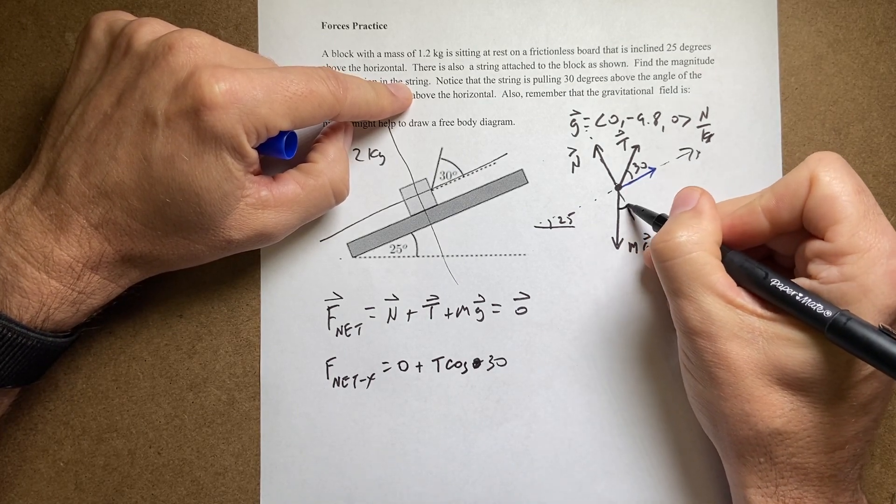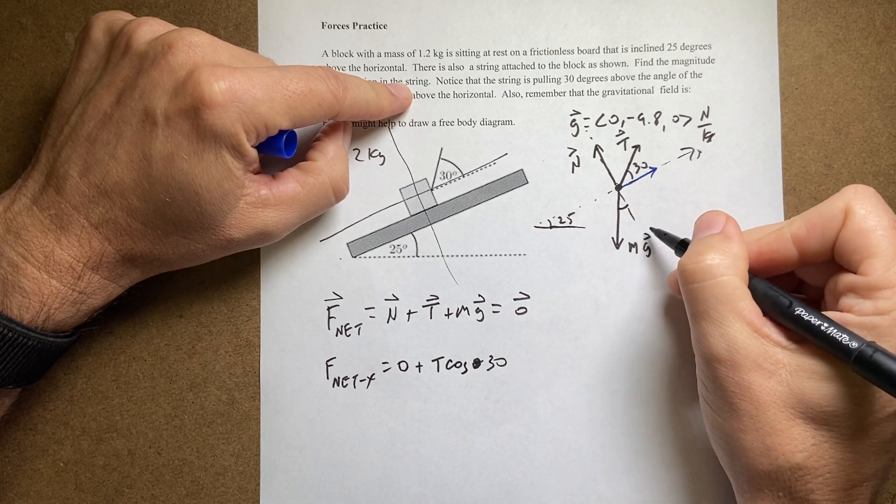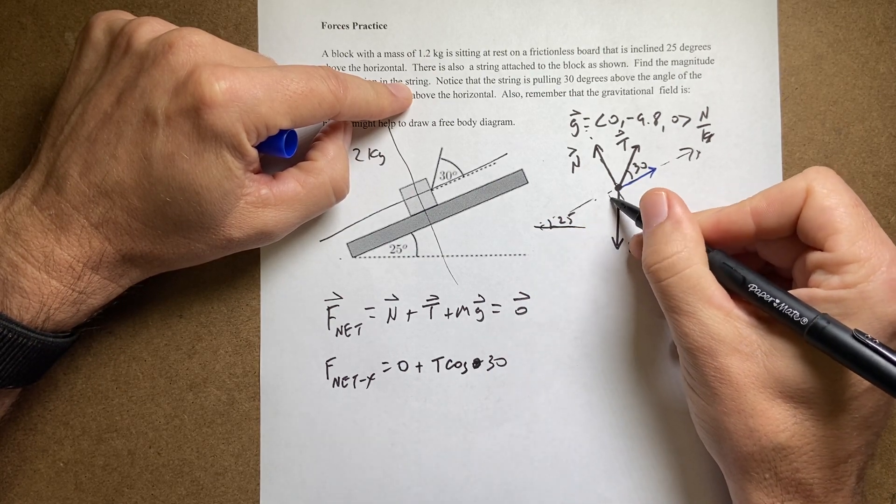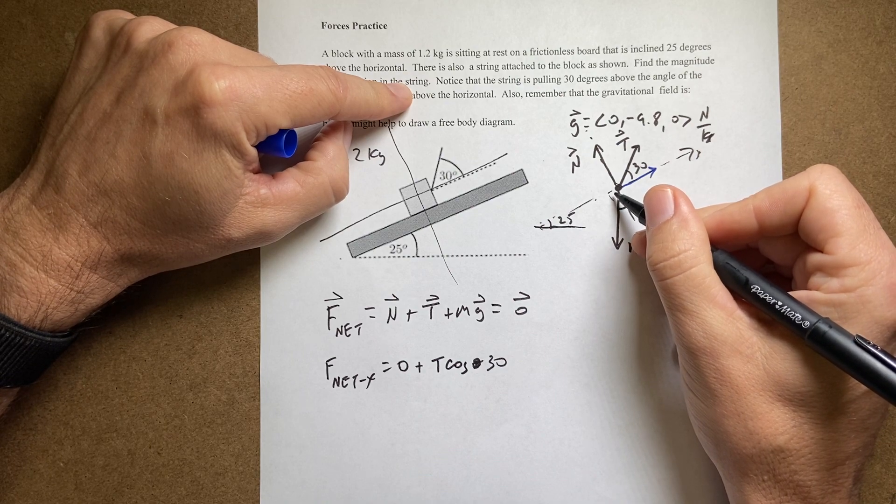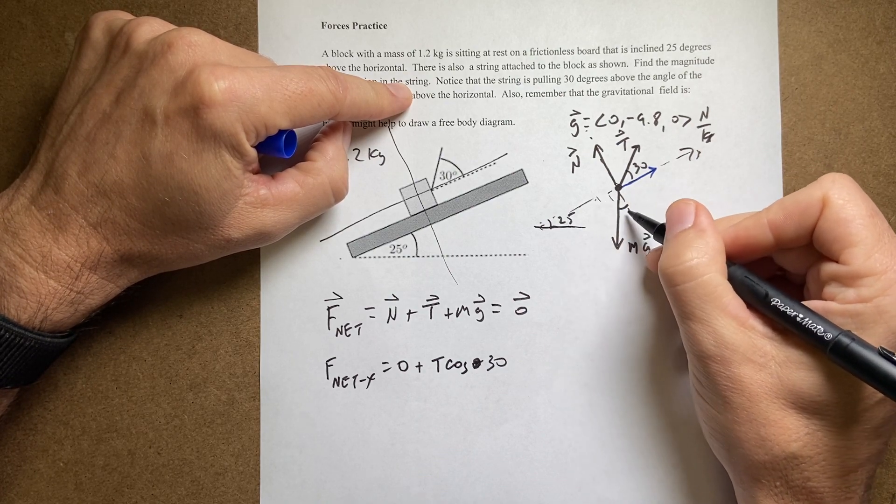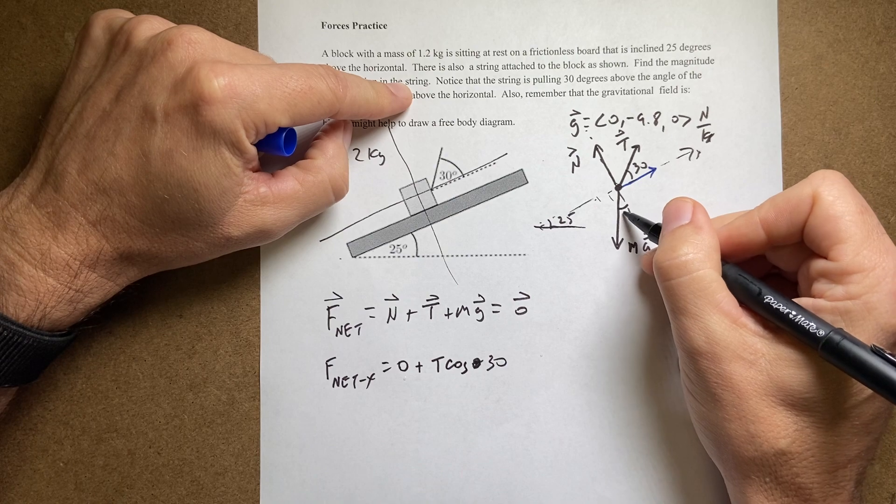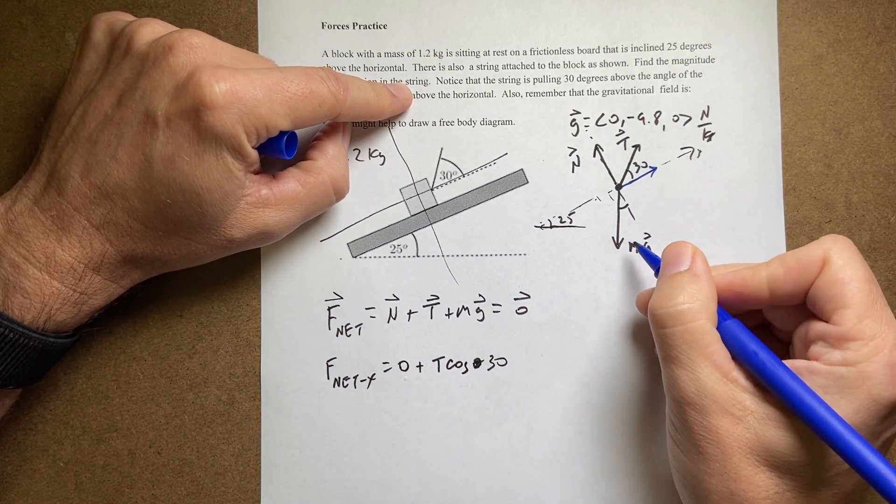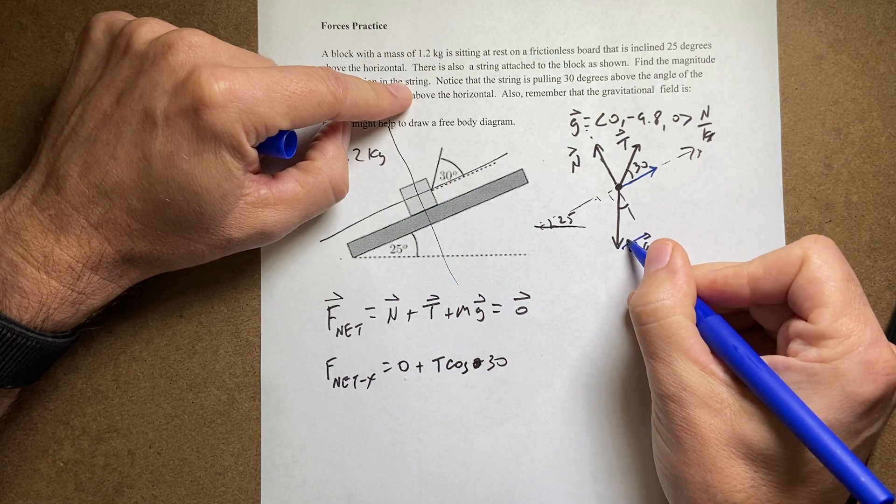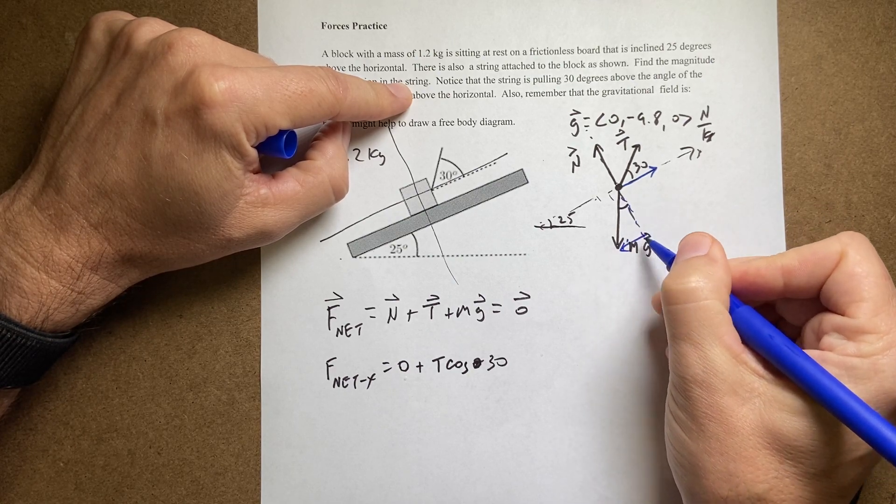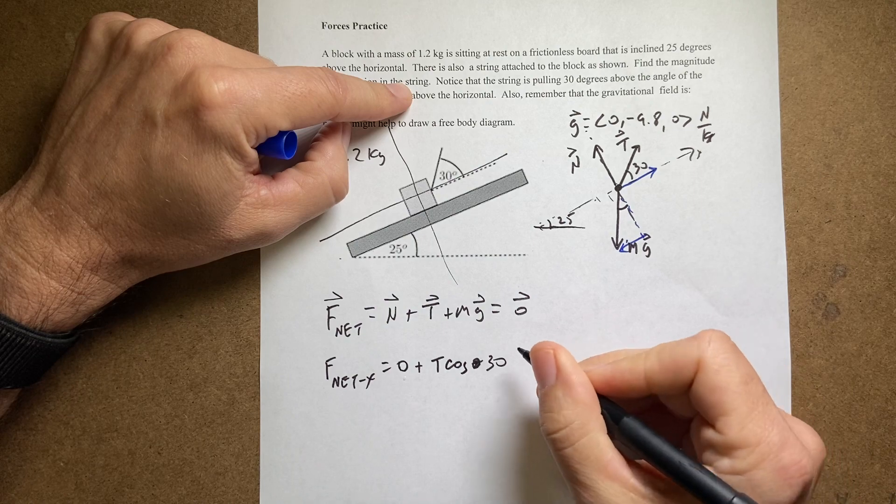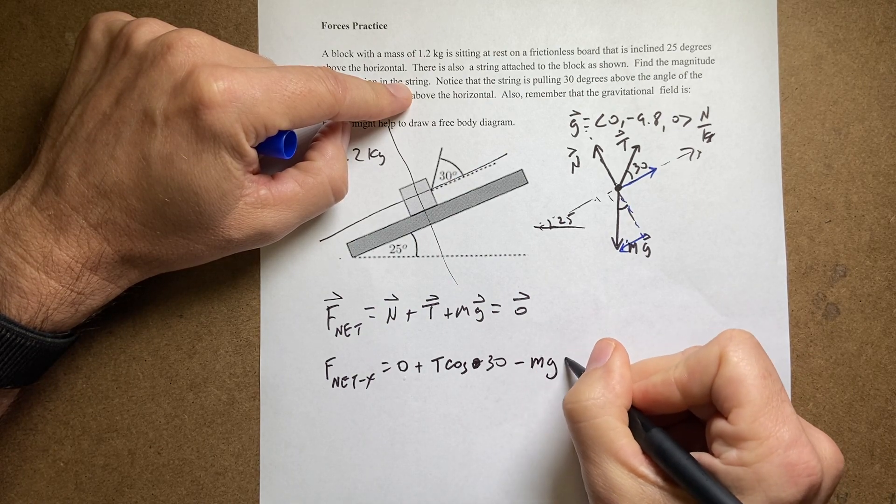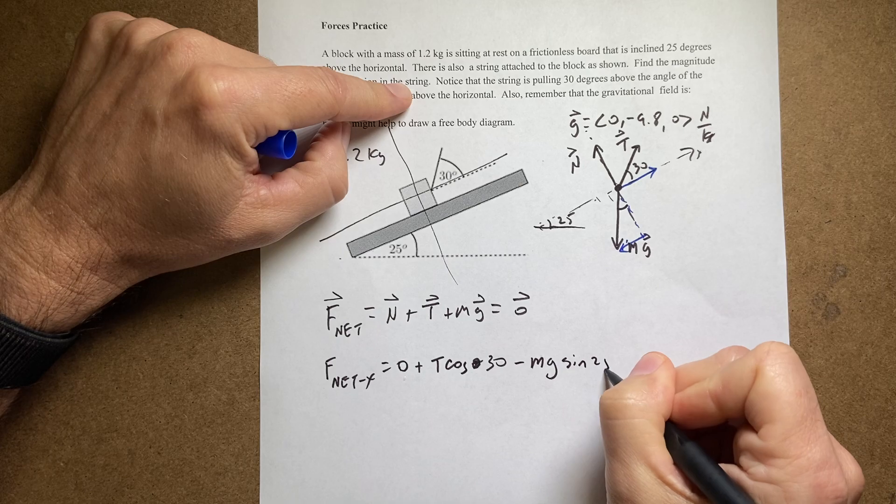Well this angle if you do a little geometry you can see that this is the right triangle. So this is the complement of 25. And then this is a right triangle. So that's the complement of the complement. So that's also 25. So the x component of the weight is this right here. Part of the triangle. So that's going to be minus mg sine 25.